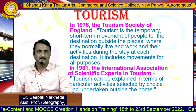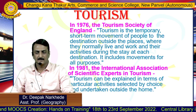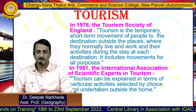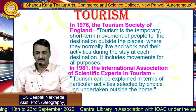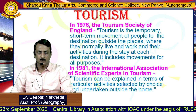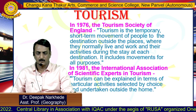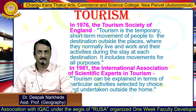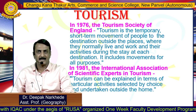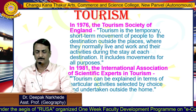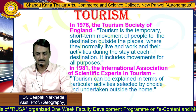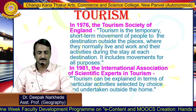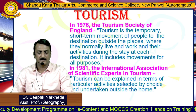Tourism can be defined in different ways. In 1976, the Tourism Society of England defined tourism as the temporary short-term movement of people to a destination outside the places where they normally live and work, and their activities during the stay at each destination. It includes movements for all purposes. Later, this definition was slightly changed by the International Association of Scientific Experts in Tourism in 1981, who explained tourism in terms of particular activities selected by choice and undertaken outside the home.